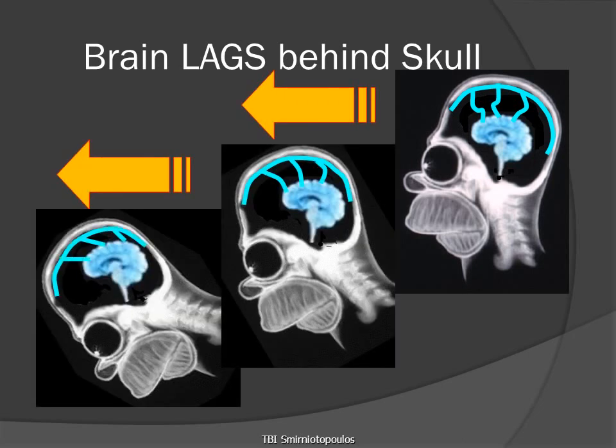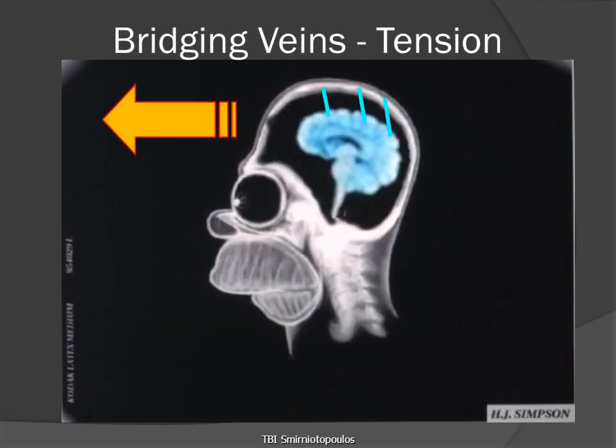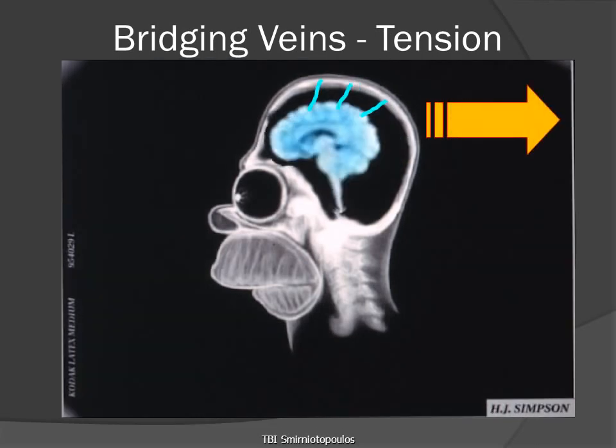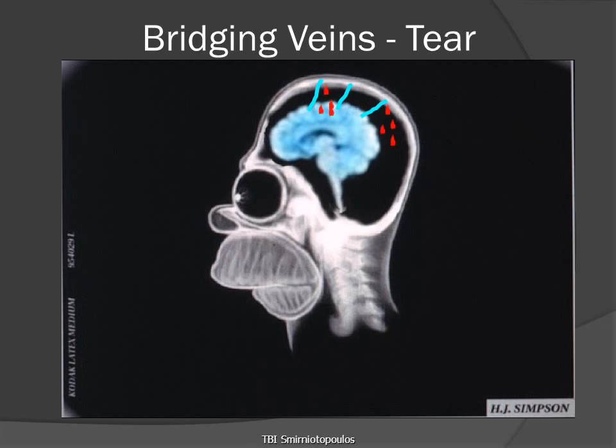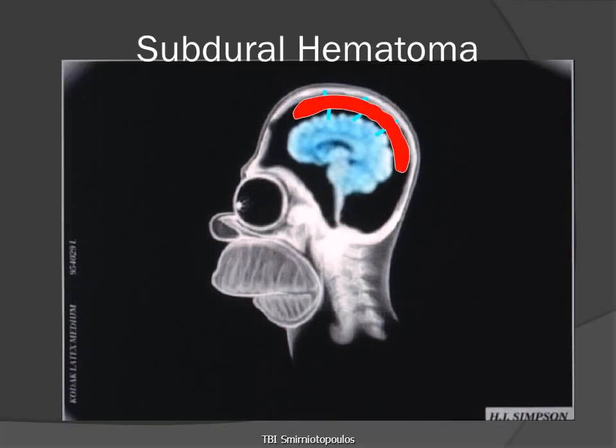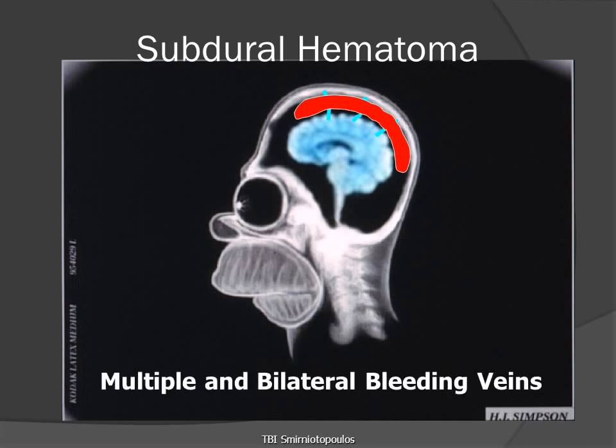If we move the skull very rapidly, the brain lags behind the movement of the skull and will therefore stretch the bridging veins. We can also imagine that when we have a sagittal force, the skull may move first anteriorly and then posteriorly, stretching the bridging veins in both directions. The bridging veins tear not where they exit the brain, but where they enter the tough dural reflection that surrounds the superior sagittal sinus. And it's not one vein that bleeds, but multiple veins that bleed and on both sides.